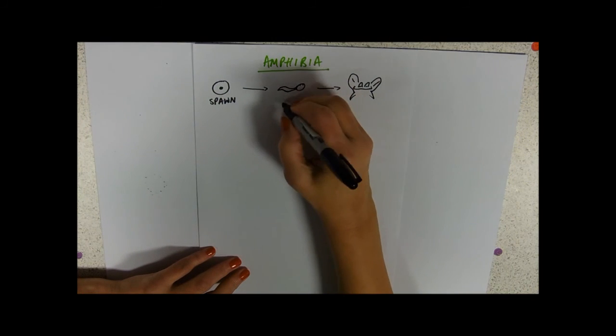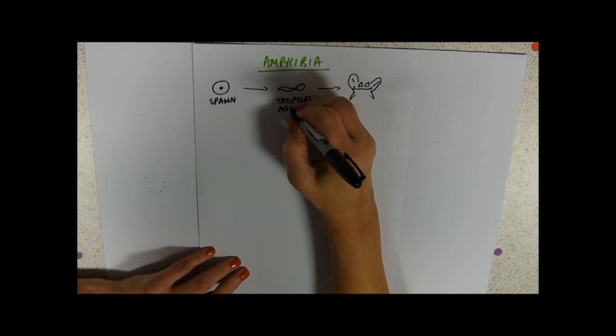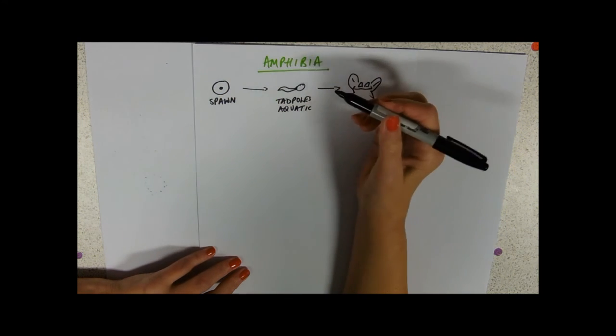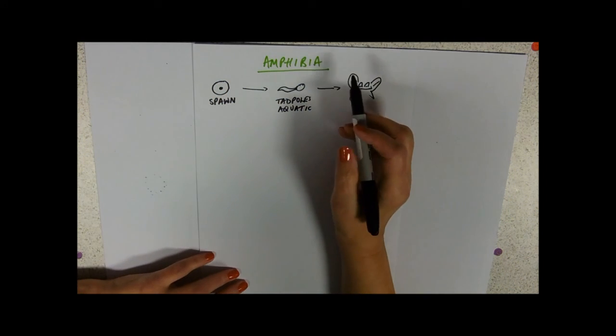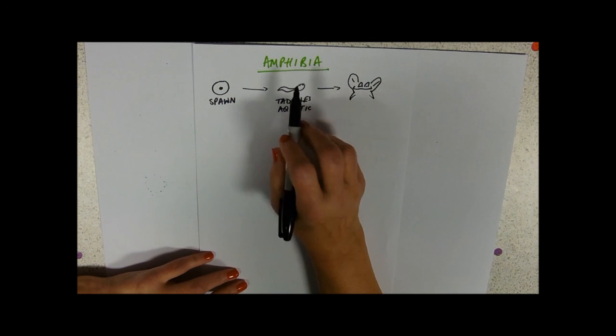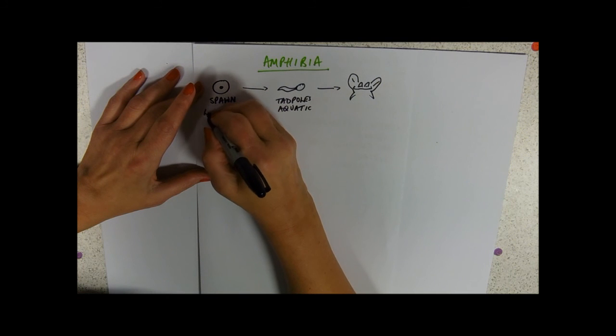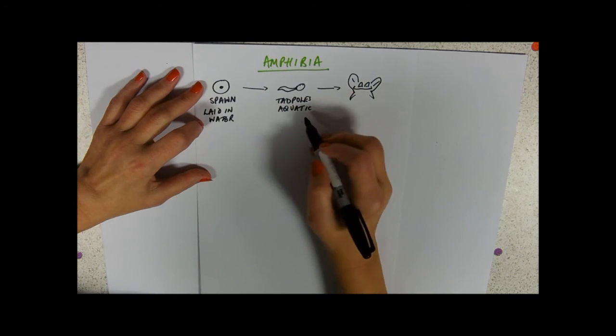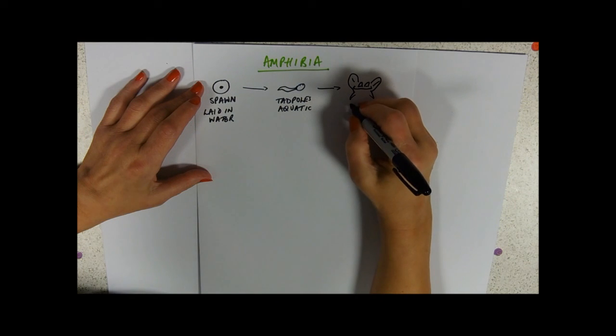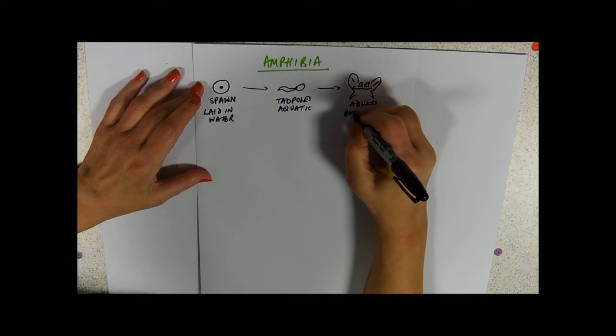So these tadpoles are aquatic. Amphibia, amphi means both, it's a Greek word meaning both, like amphitheatre, two theatres clagged together to make a circle. Amphibia live on both land and in water and they are dependent on water. So this spawn is laid in water, they do their mating in water, their eggs hatch out into tadpoles which are aquatic, and then the adults are both aquatic and terrestrial.